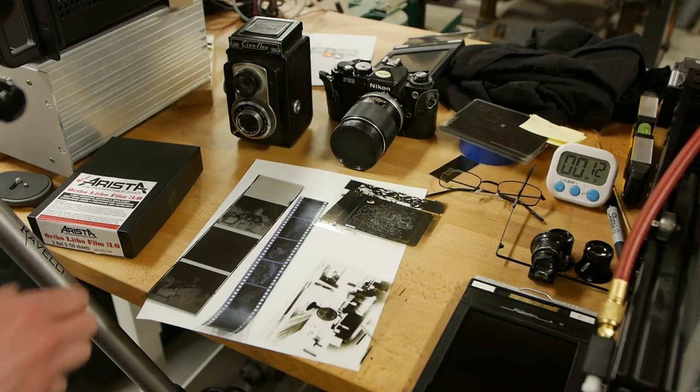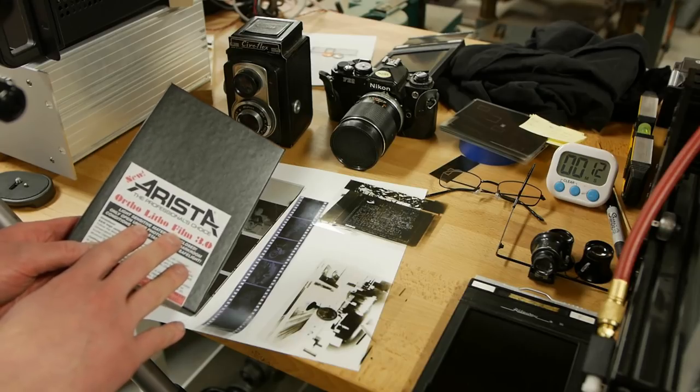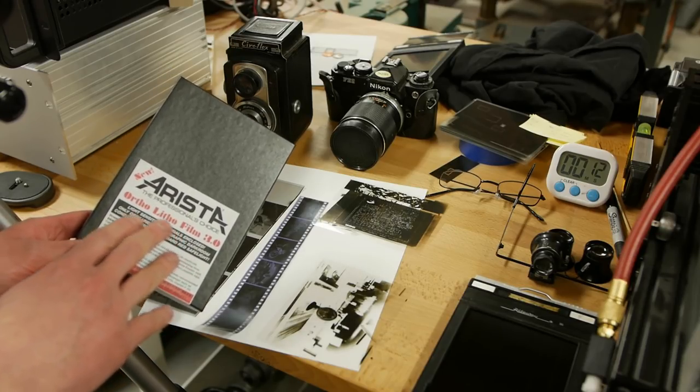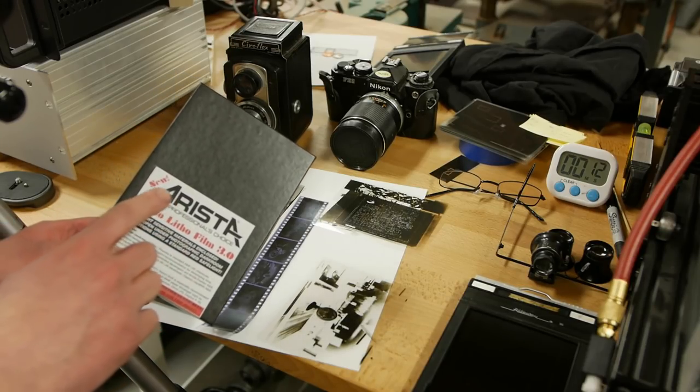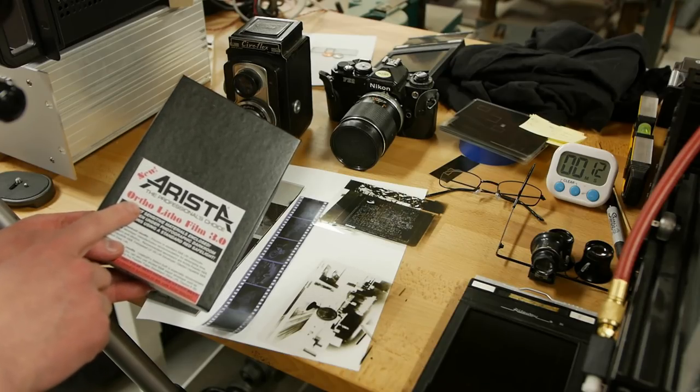And there's yet another benefit. In large format, you can get this very unusual kind of film called ortho litho. Ortho is short for orthochromatic, which in the context of photography means not sensitive to red light.